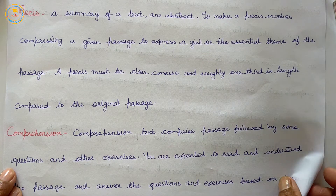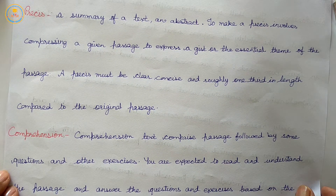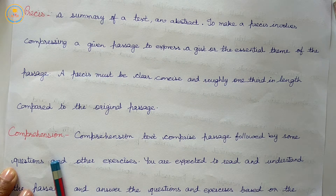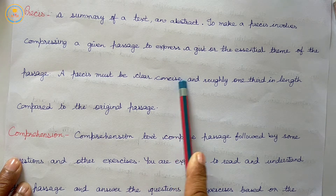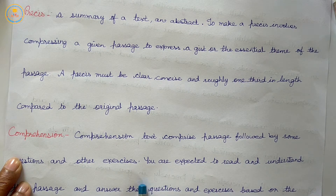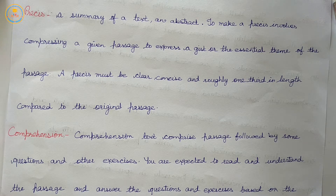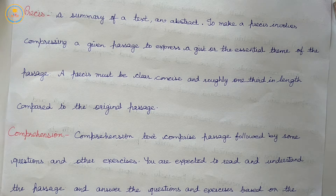Similarly, we do the same thing in précis. The first and foremost duty while doing précis is thorough reading — same as in comprehension passage. Then in précis we sort out the main idea, same as we do in comprehension. We underline the essential theme or points. A précis is a summary of a text, an abstract, involving compressing a given passage to express the gist or essential theme. A précis must be clear, concise, and roughly one third in length. In comprehension we sort out the question answers that are the main lines of the complete passage.